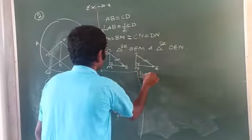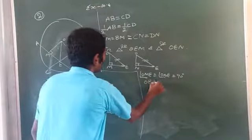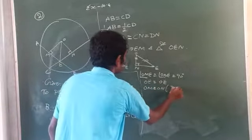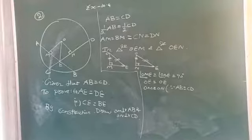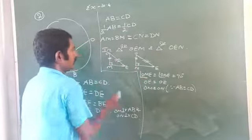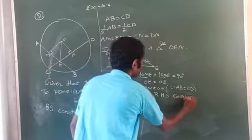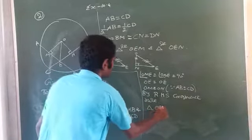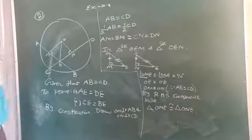Now we write: angle OME equal to angle ONE, 90 degrees each. OE is the common hypotenuse. OM equal to ON, since AB equal to CD — therefore equidistant from the center. So triangle OME is congruent to triangle ONE by RHS.